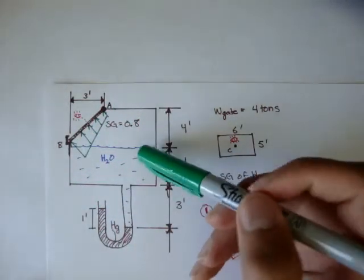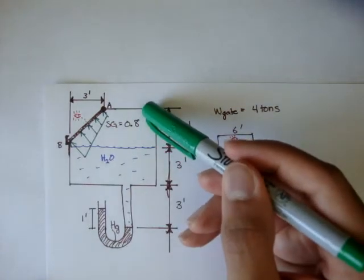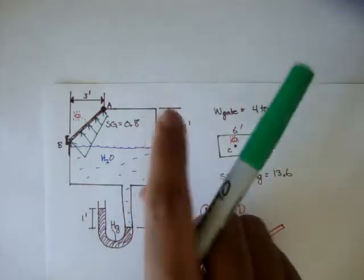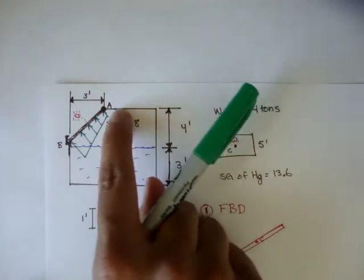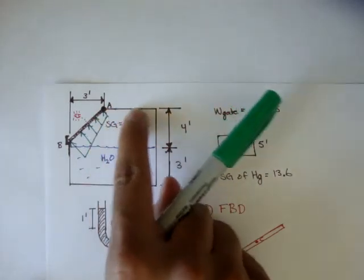And we don't really know what the pressure is at A, because the liquid actually goes all the way to the top of the gate. And it's not open to the free surface.